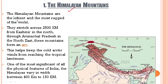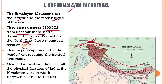The Himalayan mountains are the loftiest — meaning the tallest — and the most rugged — meaning the most rough — of the world. They stretch across 2500 kilometers from Kashmir in the north to Arunachal Pradesh in the northeast, forming an arc. There is a knot-like structure situated north of Jammu and Kashmir known as the Pamir knot, from which belts of mountains extend towards both the east and the west. Towards the east, from Jammu and Kashmir through Arunachal Pradesh, these mountains form an arc shape.